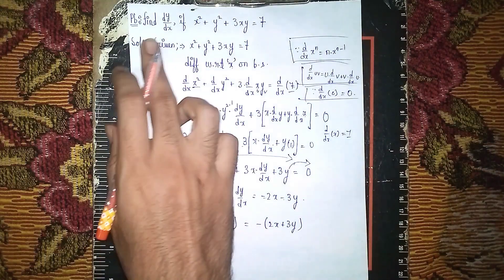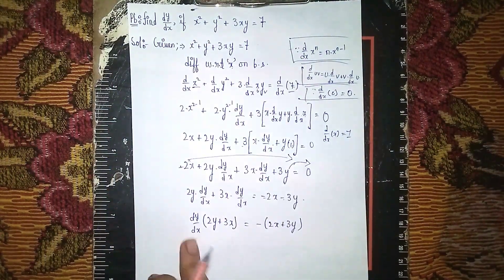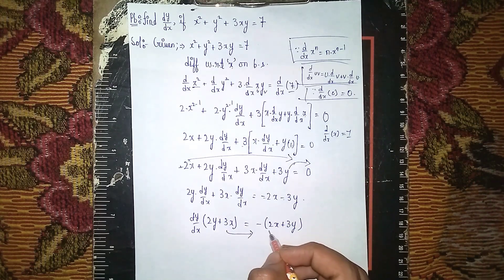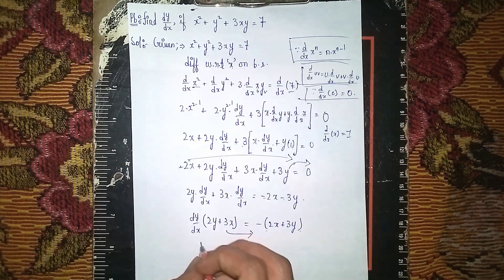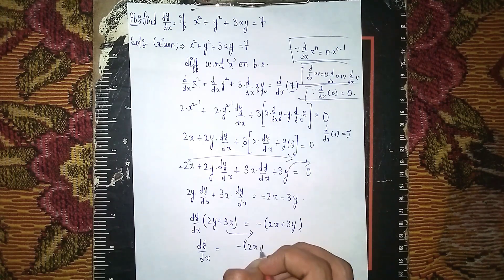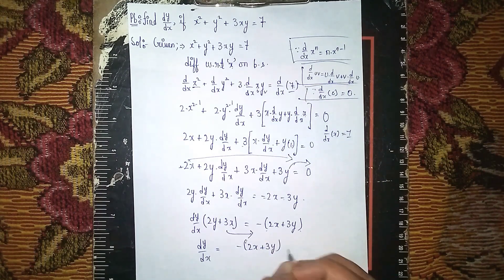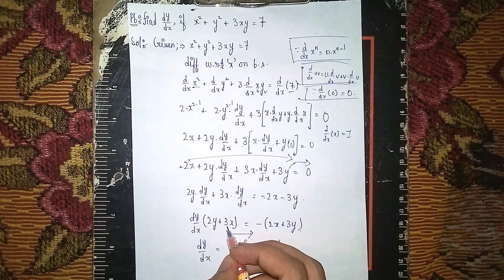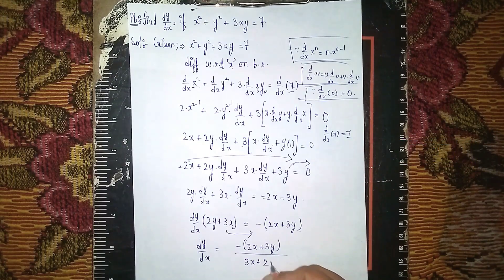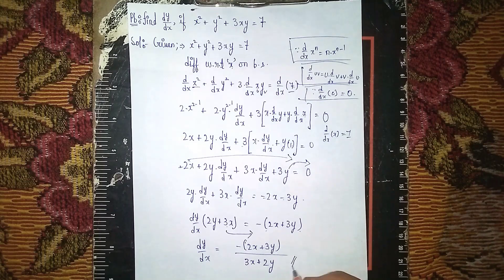Since the question asks to find dy/dx, send (2y + 3x) to the other side — it divides. So the answer is: dy/dx = −(2x + 3y) / (3x + 2y). This is our final answer. Thanks for watching.